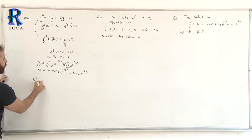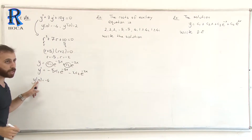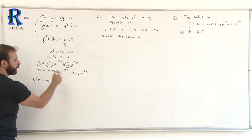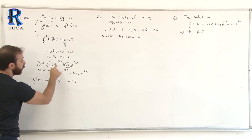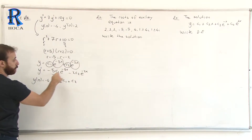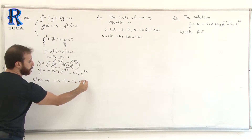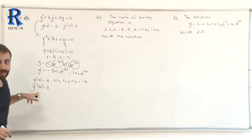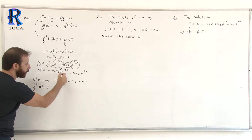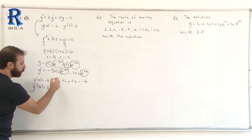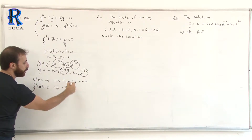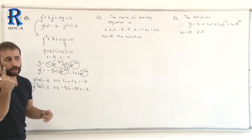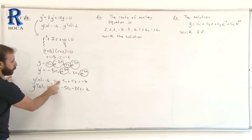Using y(0) = -4, we substitute x = 0. Since e^0 = 1, we get C1 + C2 = -4. Then using y'(0) = 2, we substitute x = 0 in the derivative. Since e^0 = 1, we get -5C1 - 2C2 = 2. So our aim is to find C1 and C2 from these two equations.